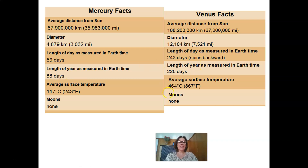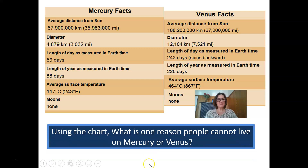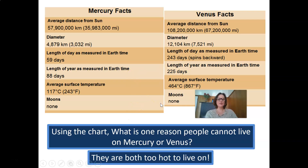Also very interesting is the average surface temperature. On Mercury, the average surface temperature is 117 degrees Celsius, whereas on Venus it is 464 degrees Celsius. Both Mercury and Venus don't have moons. Using the fact sheet, one reason people cannot live on Mercury or Venus is the surface temperature — both are way too hot for us to live on.